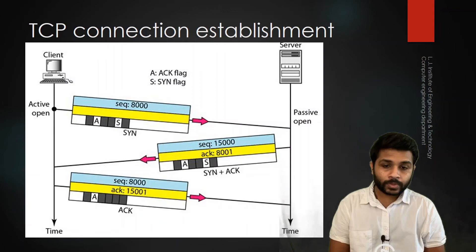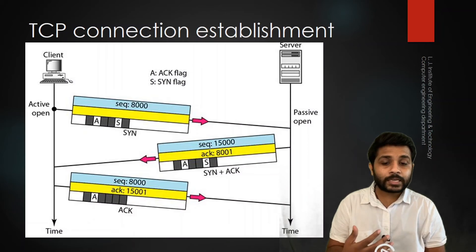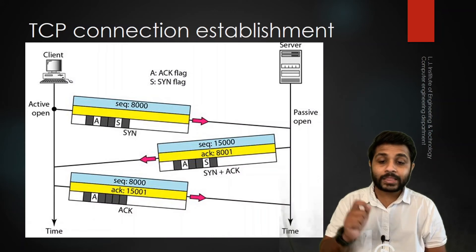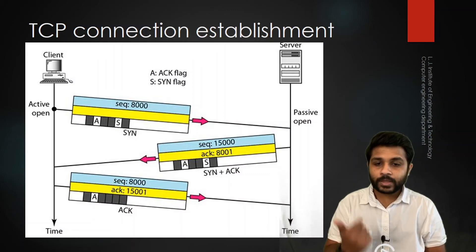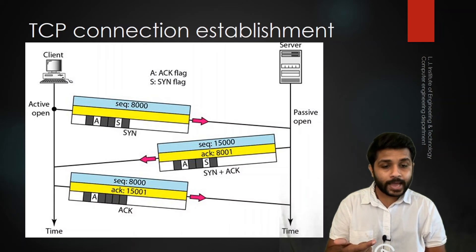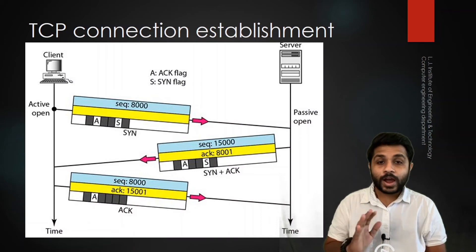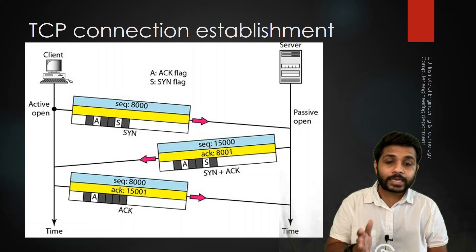When the client receives the SYN+ACK, it replies with an acknowledgement. The sequence number is 8001 and the acknowledgement is 15001, with the ACK flag set to 1. So this is how the TCP connection is established: the first packet is SYN, the reply is SYN+ACK, and the final packet is ACK.